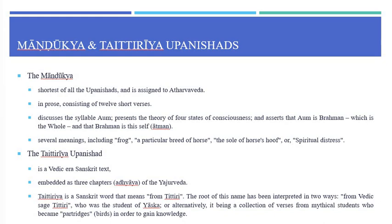The Taithriya Upanishad is a Vedic-era Sanskrit text embedded as three chapters or Adhyayas of the Yajur Veda. Taithriya is a Sanskrit word meaning 'from Thithri.' The root of this name has been interpreted in two ways: from the Vedic sage Thithri who was a student of Yaksha, or alternatively as a collection of verses from mythical students who became partridges in order to attain knowledge.